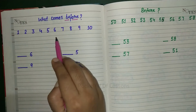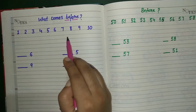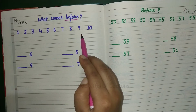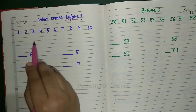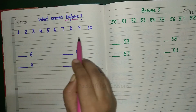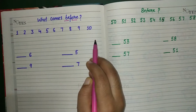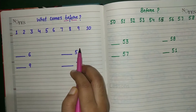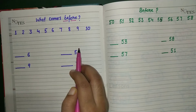5, 6, 7, 8, 9, 10. So here you can see the numbers. We have to know which number comes before.